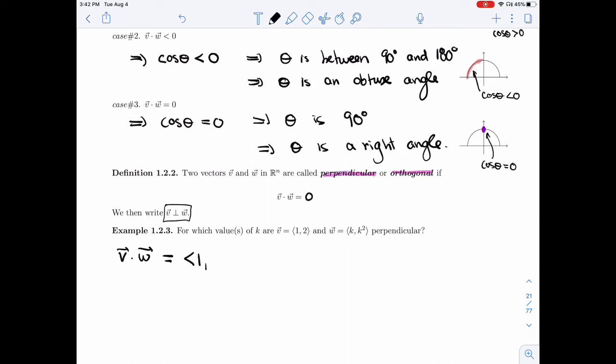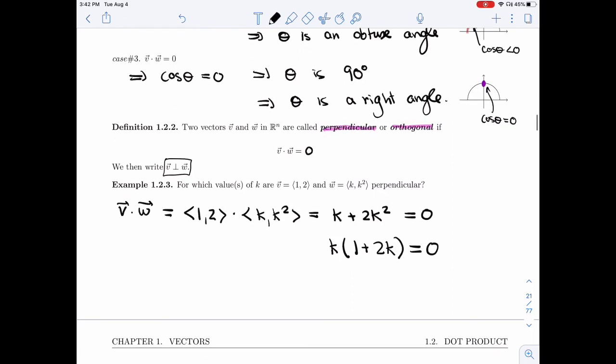So let's see what the dot product is. So I have 1, 2, I have K, K squared, so I get K plus 2K squared. And I want this to be equal to zero. So I'm going to factor. I take K out, I get 1 plus 2K left. I need this to be zero, so either K is zero, or 1 plus 2K is zero. So K is zero, or this means K is minus one-half.